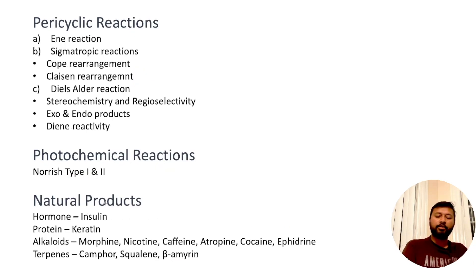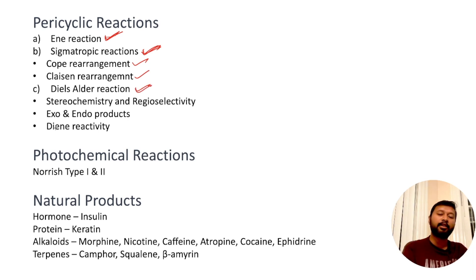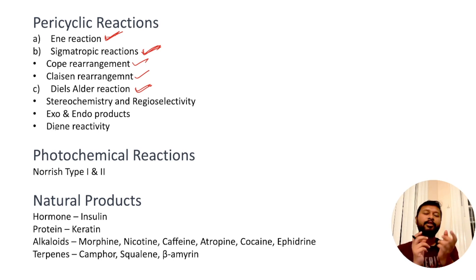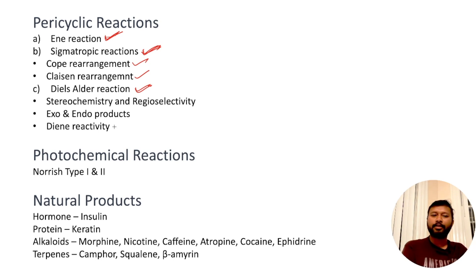Moving ahead to pericyclic reactions — a very important and easy topic once you understand it. The favorite topic here is the ene reaction, which has been asked multiple times. Sigmatropic reactions include Cope rearrangement and Claisen rearrangement. For Diels-Alder reaction, you need to know the different conditions: whether a molecule can undergo Diels-Alder, whether s-cis conformation is possible, stereochemistry and regioselectivity, exo and endo products, and the order of diene reactivity.